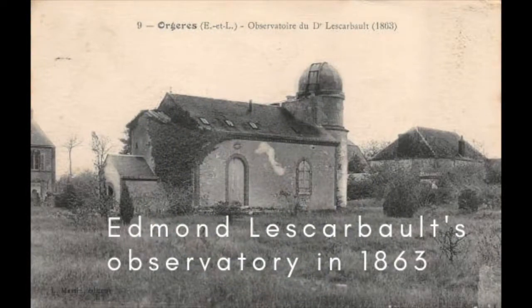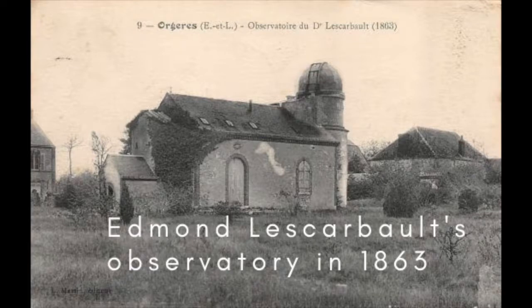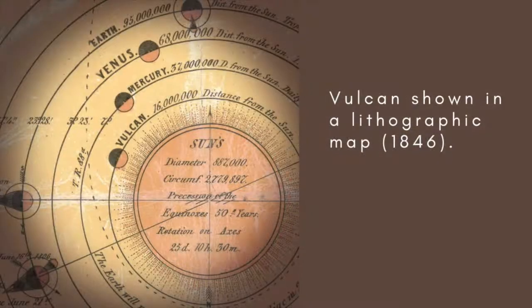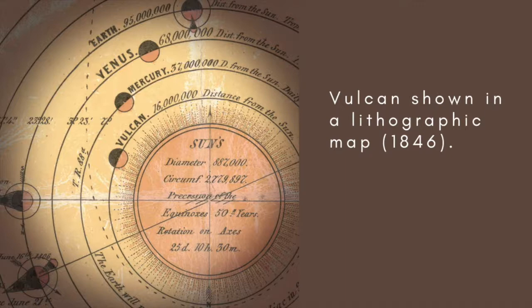Le Verrier visited Lescarbo and became convinced that he really had found Vulcan. On January 2nd, 1860, Le Verrier announced the discovery of Vulcan at a meeting of the French Academy of Sciences in Paris. Based on Lescarbo's observations, he estimated the new planet to be in a nearly circular orbit, 21 million kilometers from the Sun, with a period of revolution of 19 days and 17 hours.